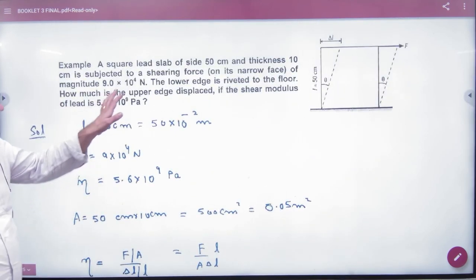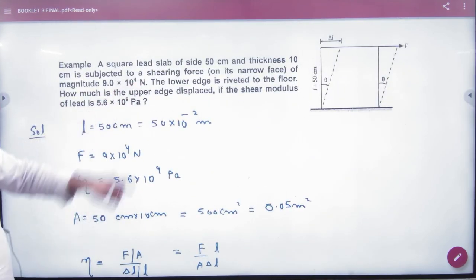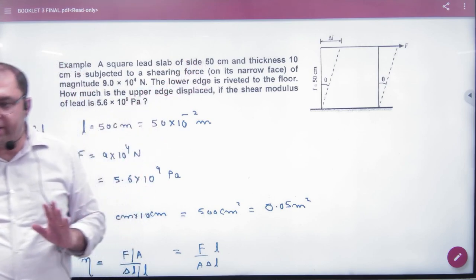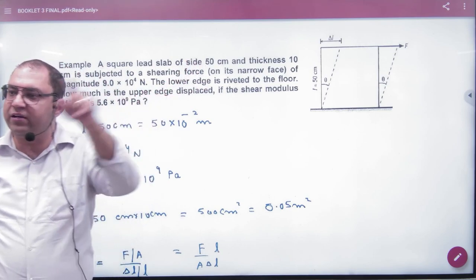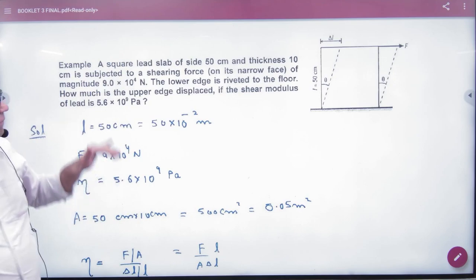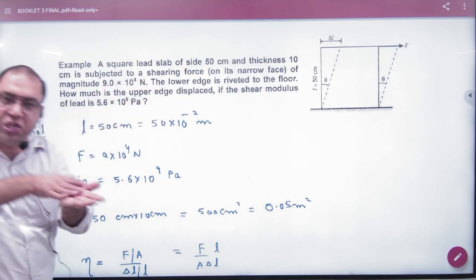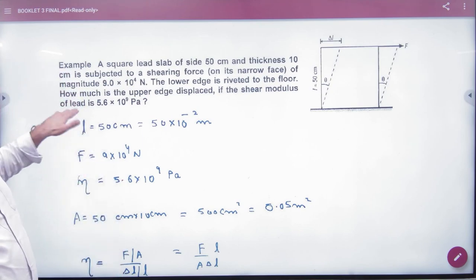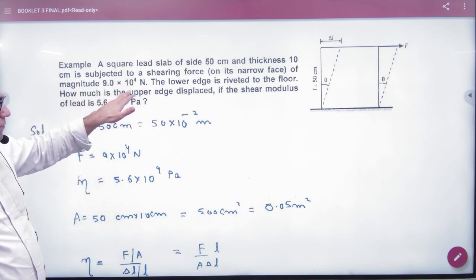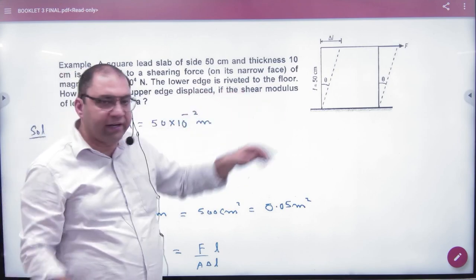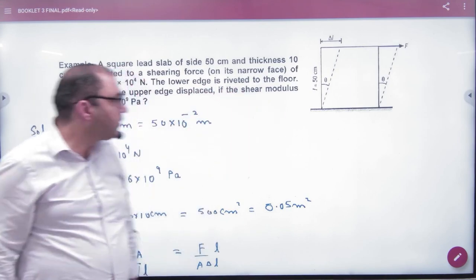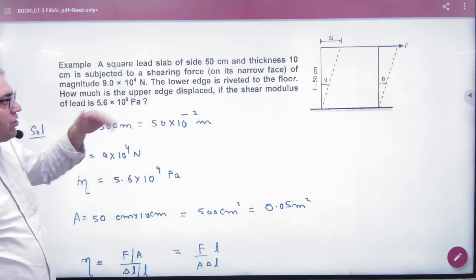Numerical is that you have a square slab. The side you know is 50 cm. So what will be area? It will be 50 x 50. You have area. And thickness is given. Shear force - shear force means tangential force - is given. Now lower edge is riveted, bound. The lower edge doesn't move. So you need to know how much the upper edge is displaced.